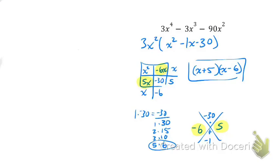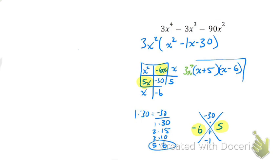All right, students, this is a level 10 problem and I'm going to tell you why it's level 10 — it's because you have to take out a GCF before you factor it. I actually have a mistake on here; I have my answer but I forgot to put my GCF on it. So I've got to put my GCF on it and then box it. I'll put the 3x² right here, and then that's it — box your answer.